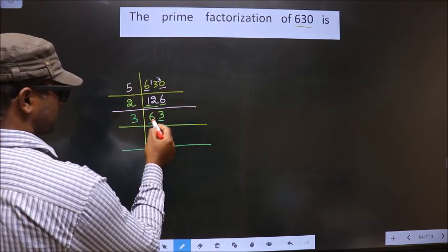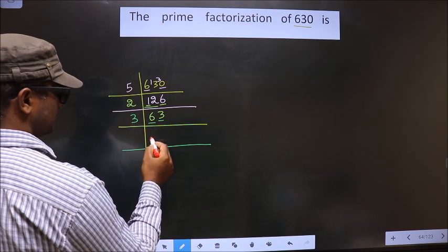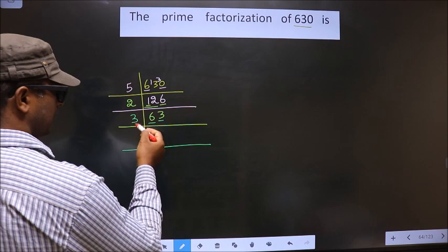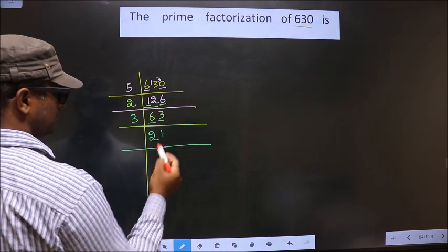Now, here you have 6. When do you get 6 in 3 table? 3, 2, 6. Next number is 3. When do you get 3 in 3 table? 3 once 3.